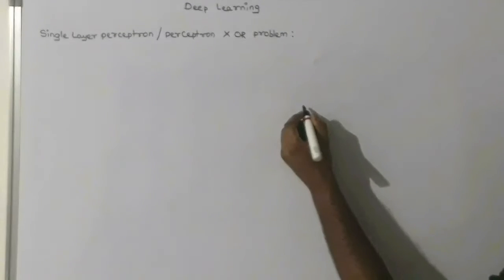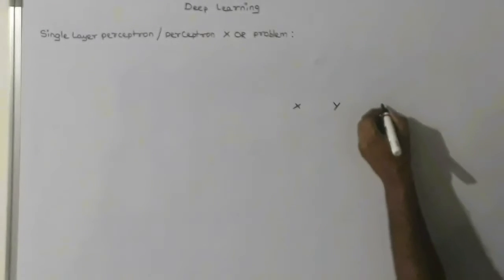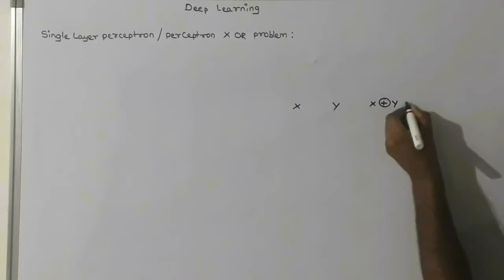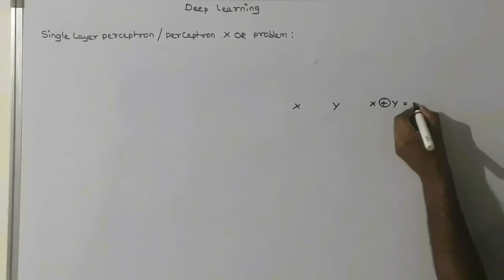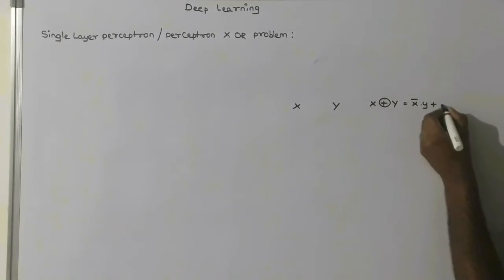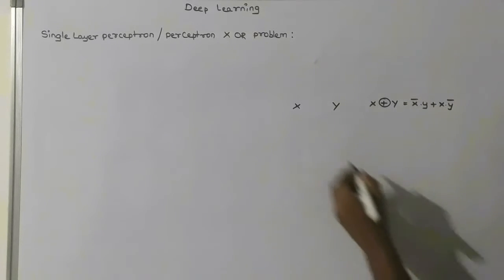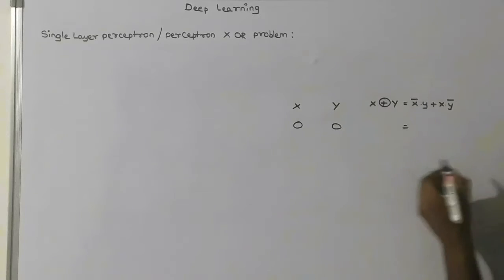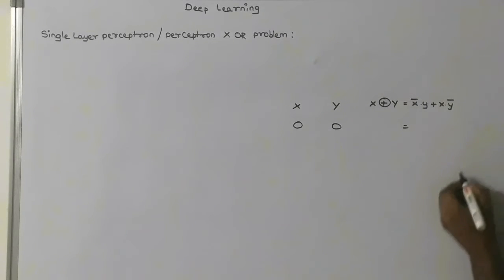The XOR problem uses inputs x and y. XOR of x and y is equal to x-bar into y plus x into y-bar. Suppose if x is 0 and y is also 0, then what is the XOR result?